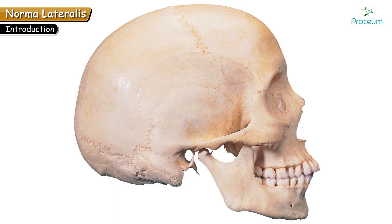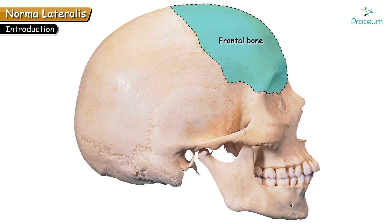What you are seeing here in this picture is the side view or lateral aspect of the skull, which is known as Norma lateralis. Let's see the bones contributing to the formation of Norma lateralis. We shall begin with the forehead bone, which is called the frontal bone. Frontal bone is best viewed in Norma frontalis.